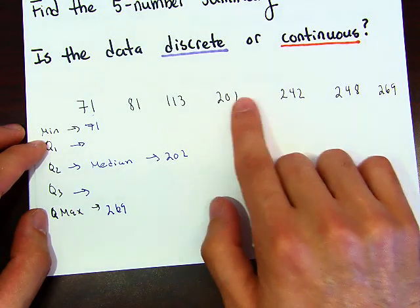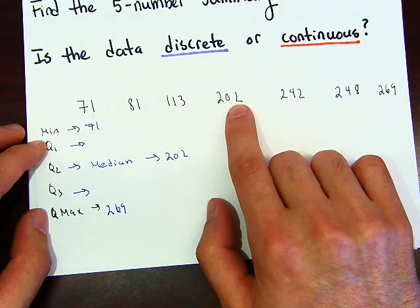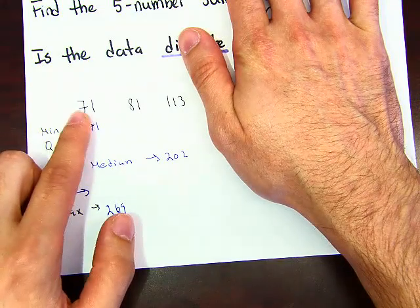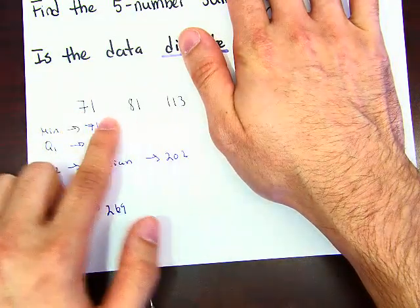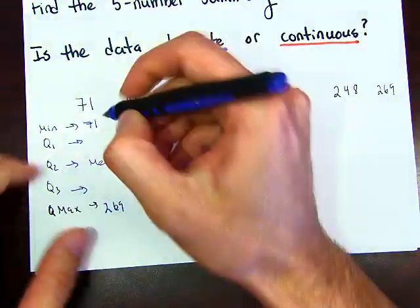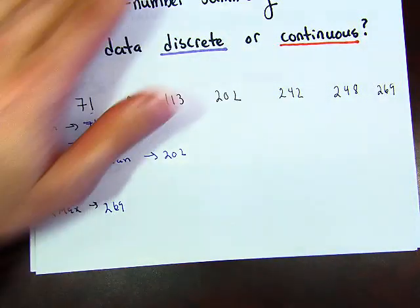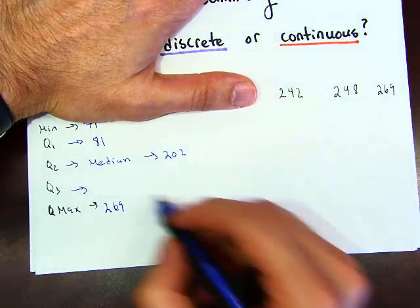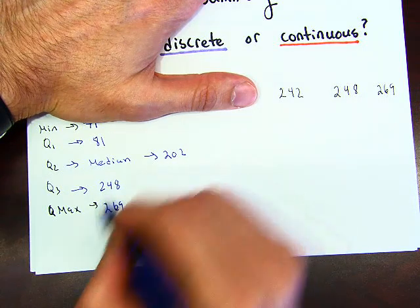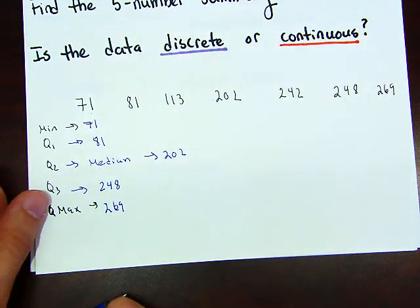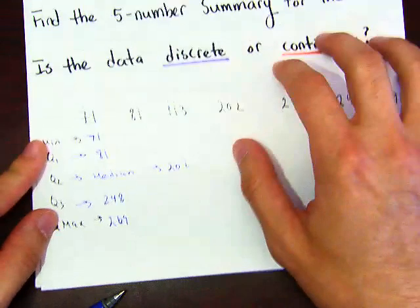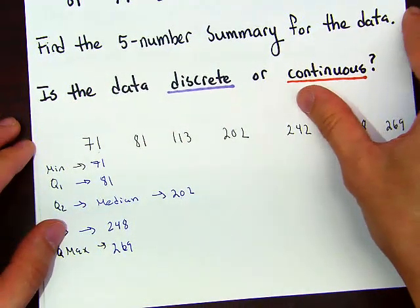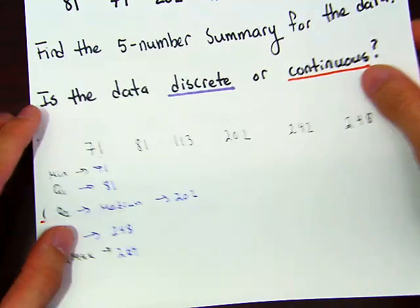To find Q1 and Q3: since 202 is the median, we take the median of the three numbers in the lower half. The middle value there is 81, so Q1 = 81. Then we take the median of the three numbers in the upper half, which gives us Q3 = 248. That finishes the five number summary.